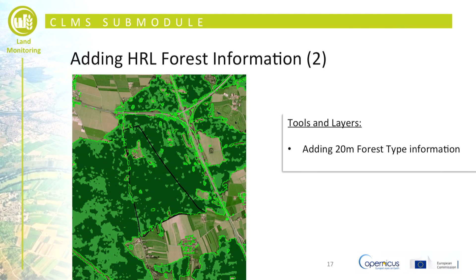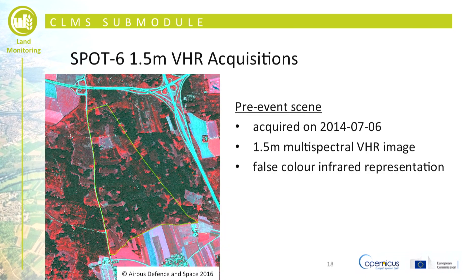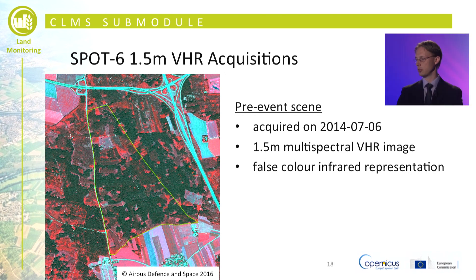The 20 meter forest type product is also added on top — bright green areas represent broadleaved forest, dark green areas represent coniferous forest. On top we have the additional commercial image scenes: a Spot 6 scene with 1.5 meter spatial resolution acquired before the event in summer 2014, shown as a false color image. Areas shown in red represent green vital vegetation — agricultural areas outside the forest or broadleaved forest — while dark reddish areas are coniferous stands, which absorb more light.